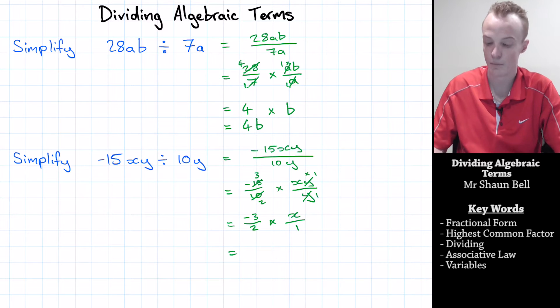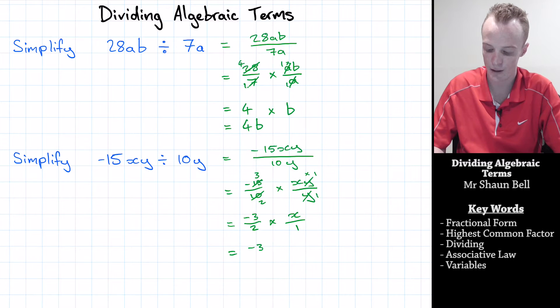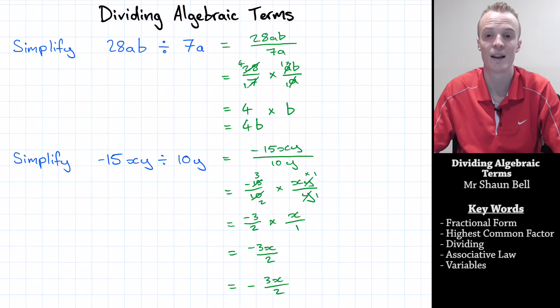When we're multiplying fractions, we multiply the numerators together first, so that's negative 3 times x, which is negative 3x, and that's divided by 2 times 1, which equals 2. So our final answer is going to be negative 3x divided by 2, and we represent that negative at the front.